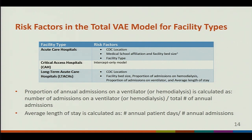For long-term acute care facilities, the following risk factors were found to be significant: CDC location, facility bed size, proportion of admissions on hemodialysis, proportion of admissions on a ventilator, and average length of stay. The last four factors are derived from the annual survey. The proportion of annual admissions on a ventilator or hemodialysis is calculated as the number of admissions on a ventilator or hemodialysis divided by the total number of annual admissions. Average length of stay is calculated by taking the annual number of patient days divided by annual admissions.